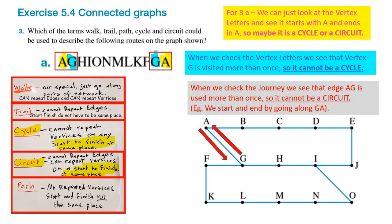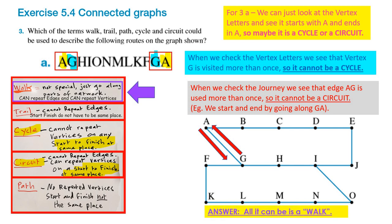So it's not a cycle and it's not a circuit. What is it? A walk. Remember, any journey through a network can be a walk. So if you're stuck for an answer, walk is always one possibility. The only thing this can be is a walk.